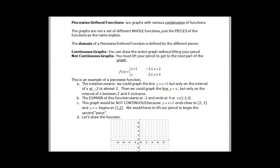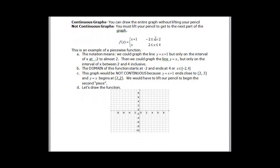Let's look at our first example. We have x plus 1, but it's only between negative 2 and 2 in the x's — it doesn't include 2. If x equals negative 2, then negative 2 plus 1 equals negative 1, so the point (−2, −1) is on the graph. If x equals 0, we get 1, so (0, 1) is on the graph. At x equals 2, we get 2 plus 1 equals 3, so (2, 3) is an open circle because 2 is not included.